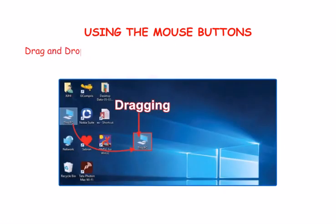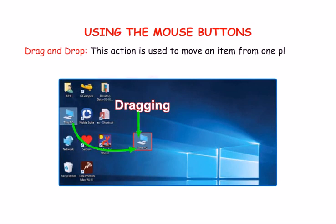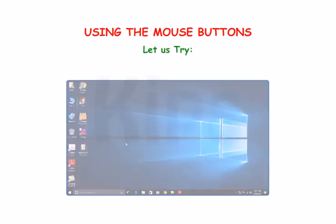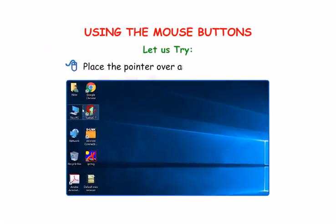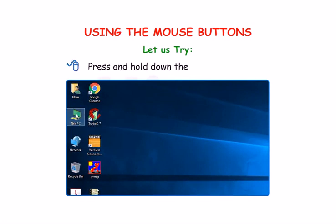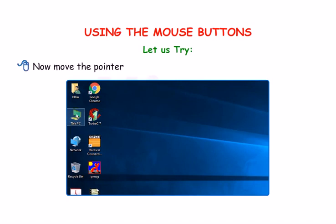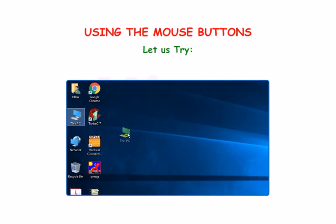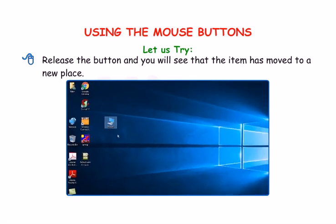Drag and drop. This action is used to move an item from one place to another on the monitor with the help of a mouse. Let us try. Place the pointer over an item on the screen. Press and hold down the left mouse button. Now move the pointer to the place where you want to place the item. Release the button and you will see that the item has moved to a new place.